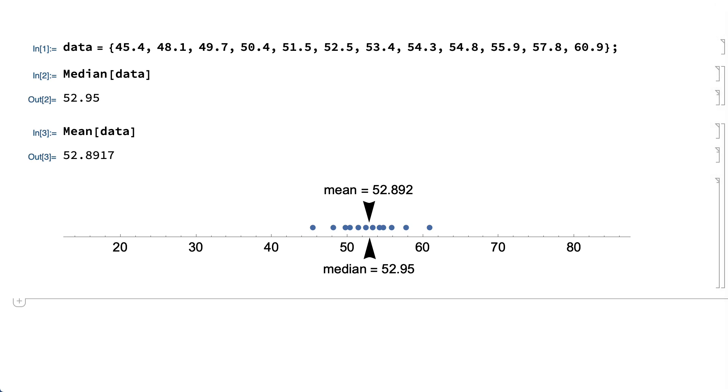Here is a number line plot of the data with the mean and the median marked on the plot. If the distribution of the numbers in the data is symmetrical, or at least approximately symmetrical, then the mean and the median will be in approximately the same place.